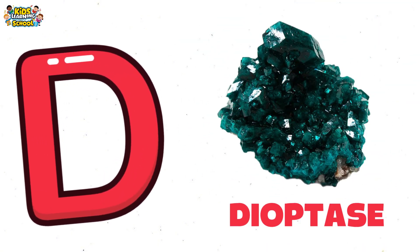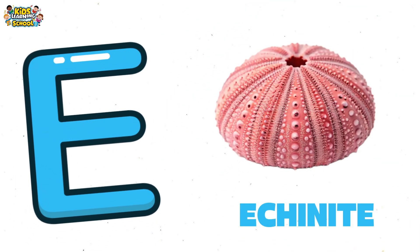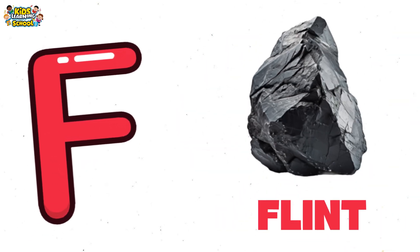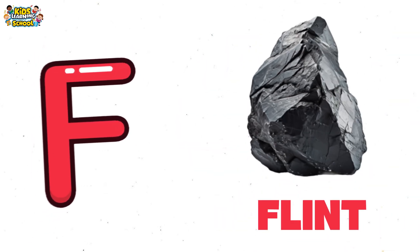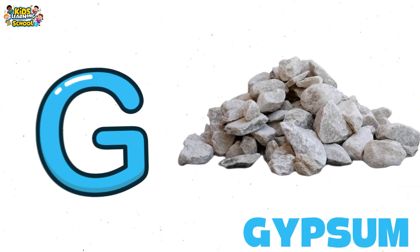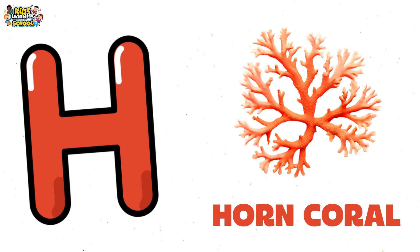D is for dioptase with emerald eyes. E is for echinoid, spiny and round. F is for flint from deep in the ground. G is for gypsum, soft and white. H is for horn coral, frozen in time's light.